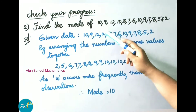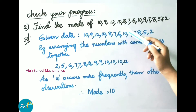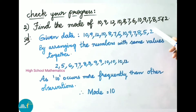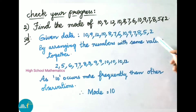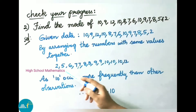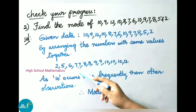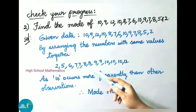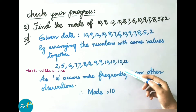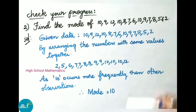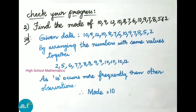Second sum: Find the mode of 10, 9, 12, 10, 8, 7, 6, 10, 9, 7, 8, 5, and 2. Arranging the numbers in ascending order with same values together: 2, 5, 6, 7 (×2), 8 (×2), 9 (×2), 10 (×3), and 12. Since 10 occurs more frequently than other observations, mode equals 10.